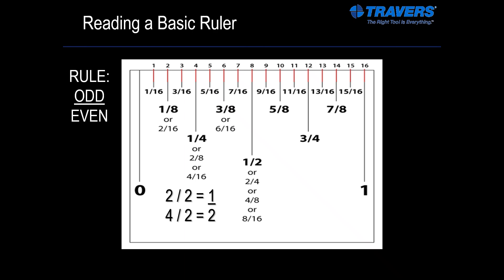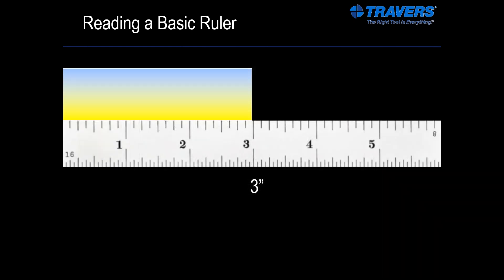So it sounds kind of complicated, and it's really not. It's good to go through this just so it's understood and you get the whole mathematical part of it. But I'm going to show you how it's going to be a little bit easier. So this is three inches — this box on top is right at the line next to the three, and that means it's three inches. Here's a line between the two and the three, right in the middle. Notice the length of this line is longer than any of the others except for the whole inches — that longer line is the half. So that makes this two and a half.